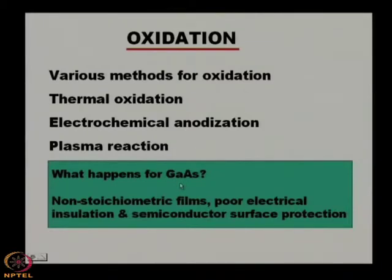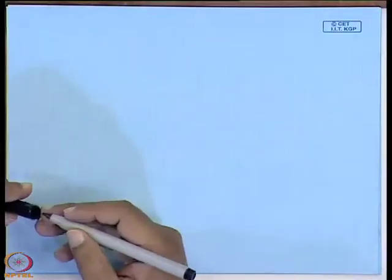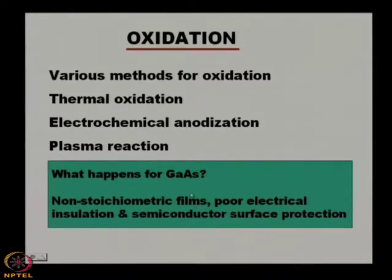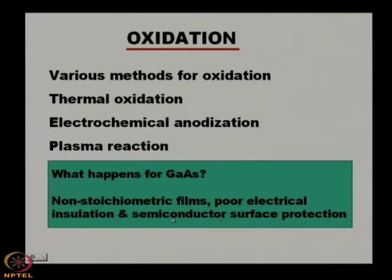For gallium arsenide, if we try to oxidize the surface, we get both arsenic oxide and gallium oxide, resulting in non-stoichiometric films. Because of non-stoichiometry, poor electrical insulation results, which defeats the purpose of the oxide layer used for insulation between devices or as gate oxide. The semiconductor surface protection is also very poor.